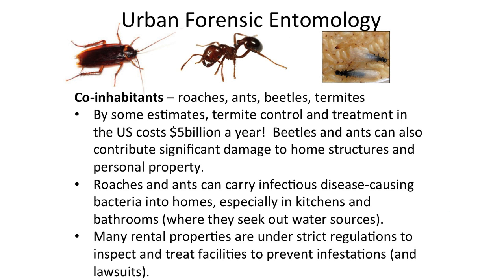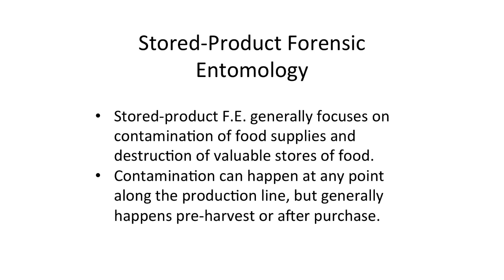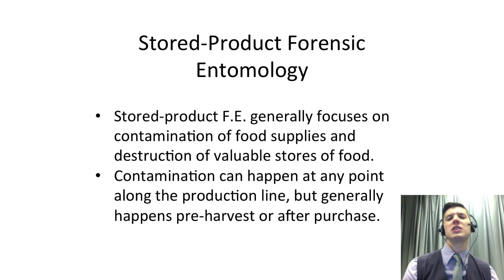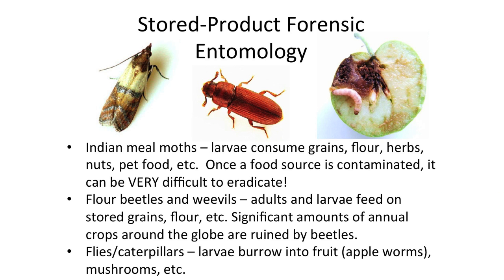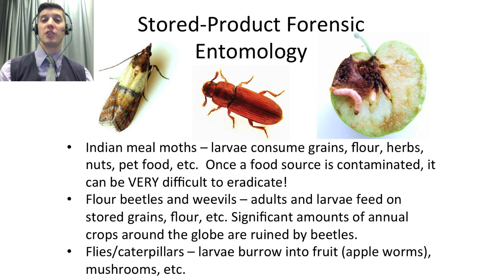Let's go on to stored product forensic entomology. Let's say you have a case of grain totally contaminated with beetles — you want to know who's responsible for that, because if you're trying to sell that grain and you can't, you're out a lot of money. Contamination can happen at various points. The Indian meal moth has a global distribution and is one of the most widespread and annoying of all insects. They can eat almost anything as larvae — from grains and flour to herbs and nuts. Once a food source is contaminated, these moths are very difficult to get rid of.